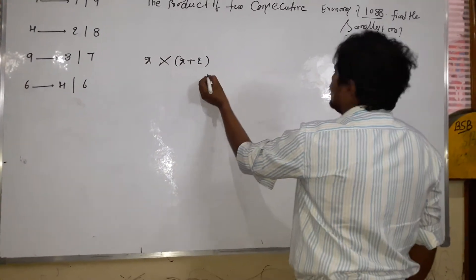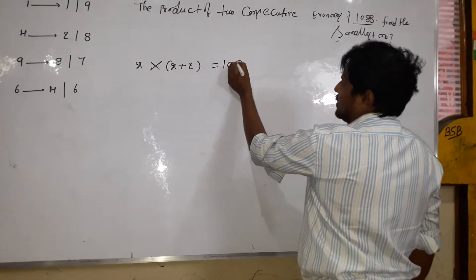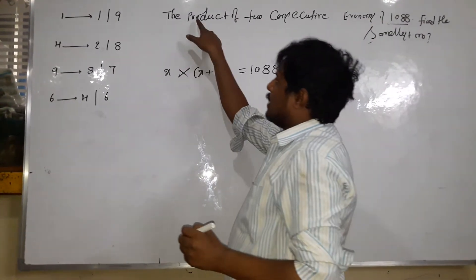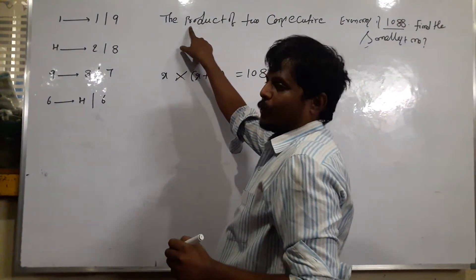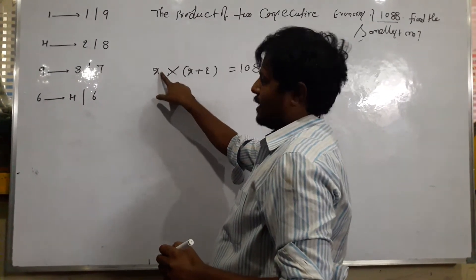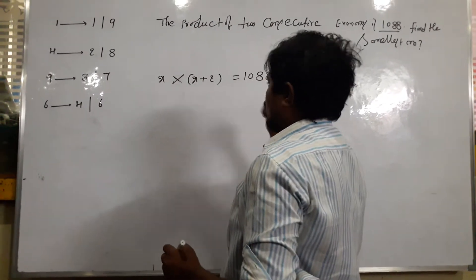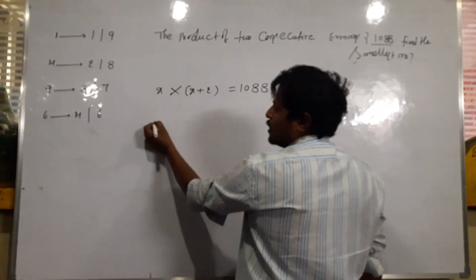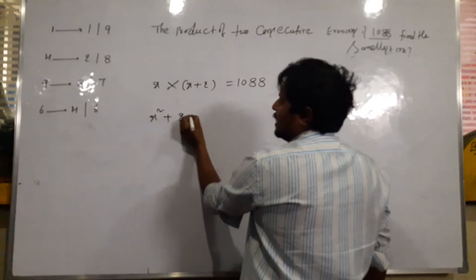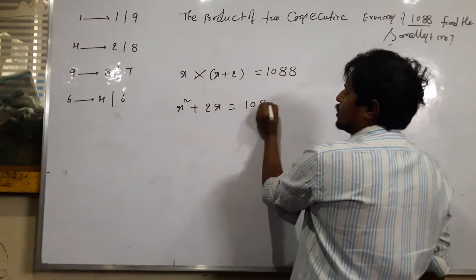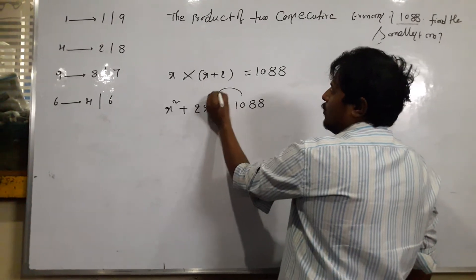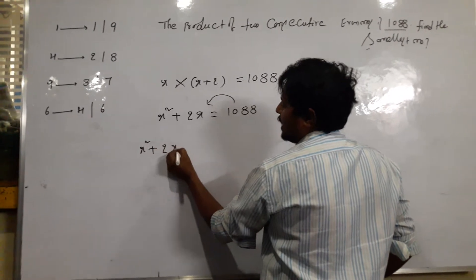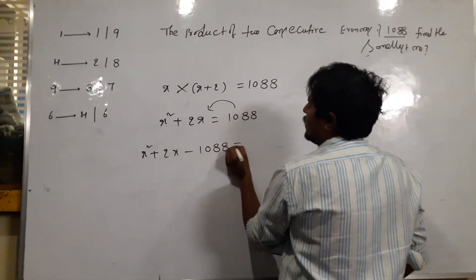x into x plus 2 equals 1,088. We have already mentioned the product — the product of the two consecutive even numbers. That is why x into x plus 2 equals 1,088. If we expand this: x into x equals x squared, x into 2 equals 2x. So it becomes x squared plus 2x minus 1,088 equals 0.